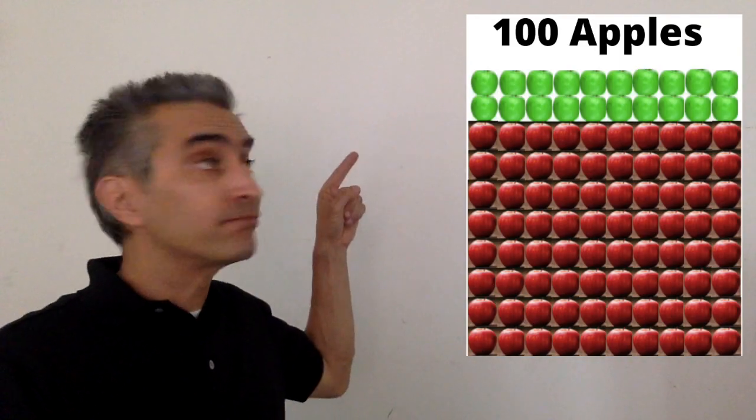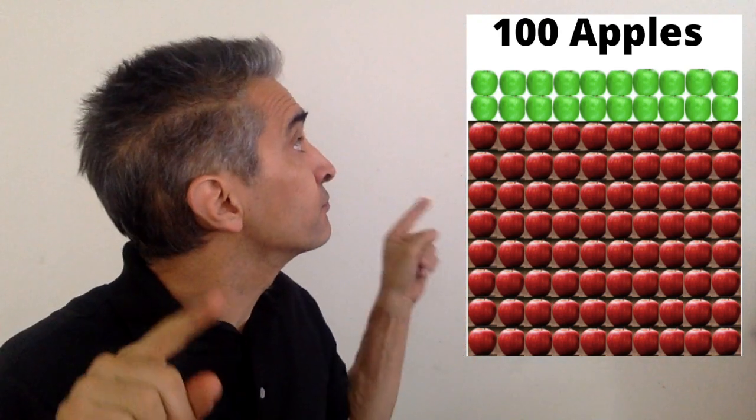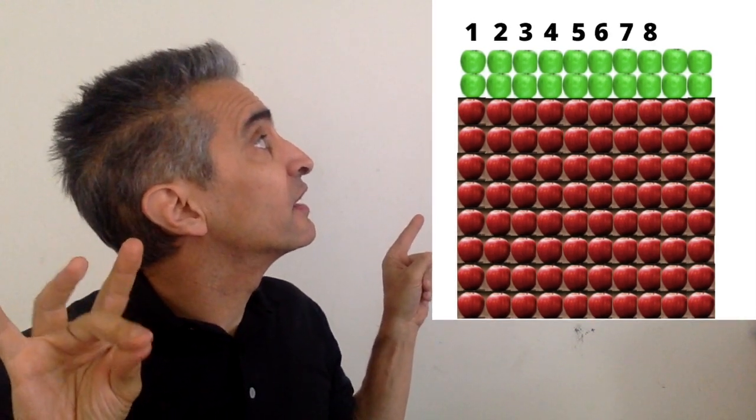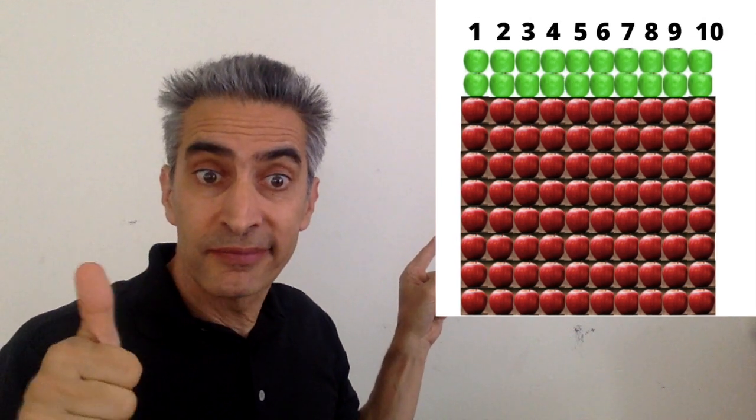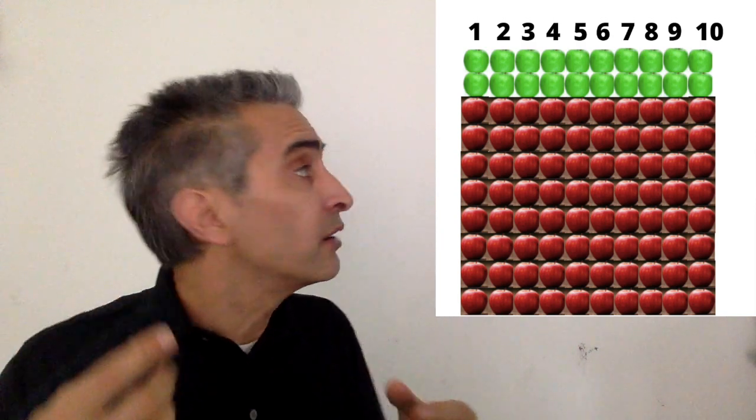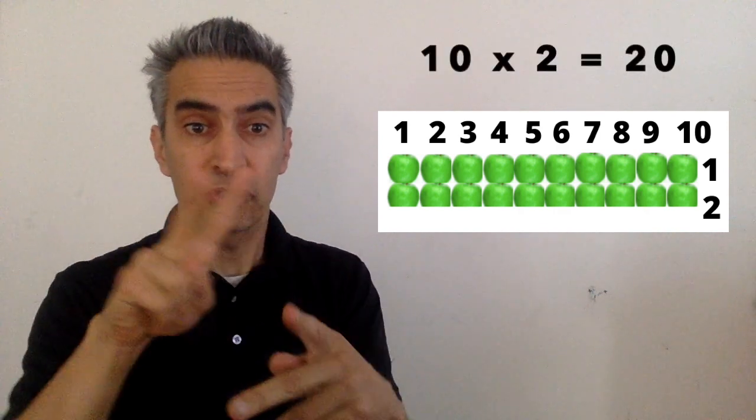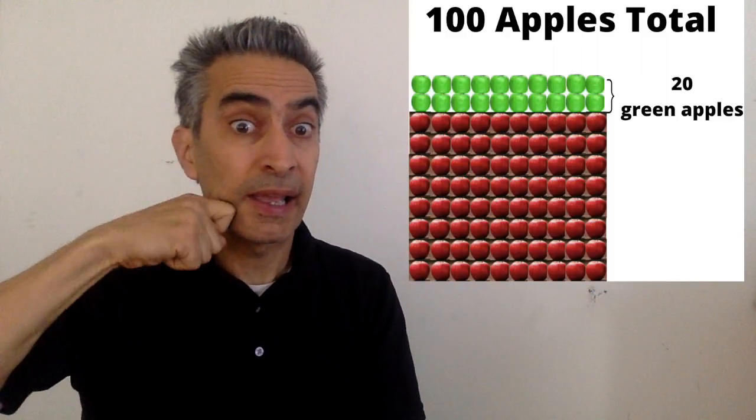Some of the apples are green, and the others are red. Maria counts all the apples that are green: one, two, three, four, five, six, seven, eight, nine, ten. How many rows of green apples are there? One, two. Ten times two equals twenty green apples.